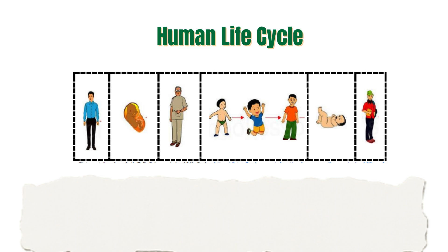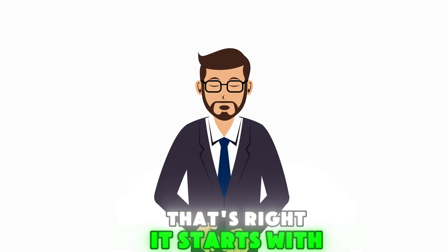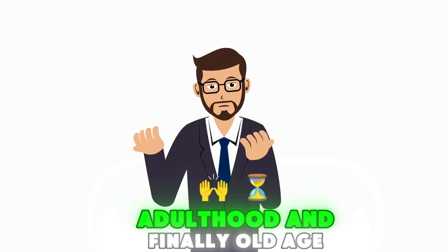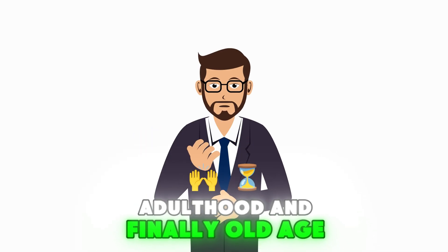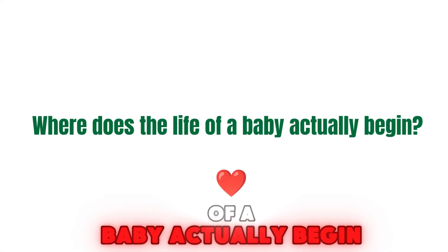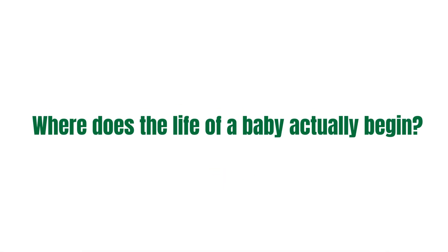Before we dive into our lesson, let's do a quick review. Look at these pictures. They show the stages of the human life cycle. Can you arrange them in the correct order? That's right. It starts with a baby, then childhood, adolescence, adulthood, and finally old age. But here's a big question: where does the life of a baby actually begin? That's what we'll learn today.